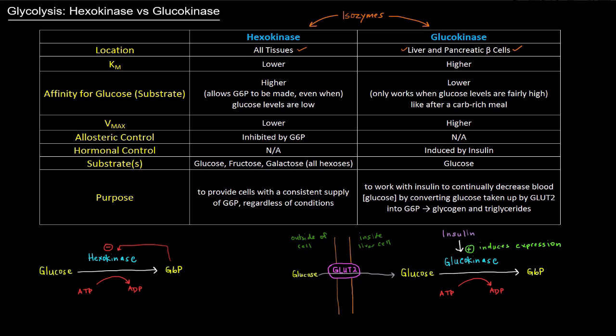One key difference is their KM values. Hexokinase has a lower KM, which means it has a higher affinity for glucose, its substrate. KM and substrate affinity are inversely related.